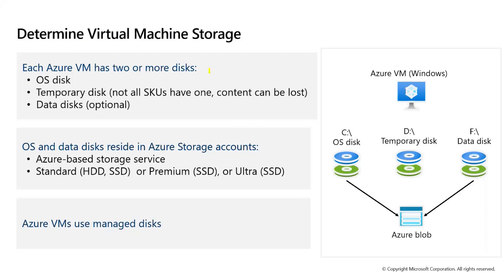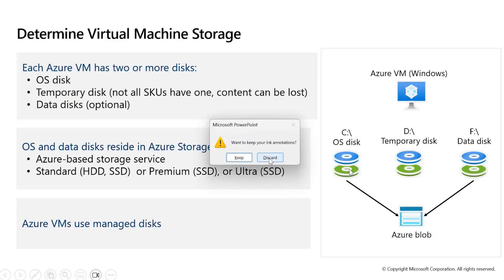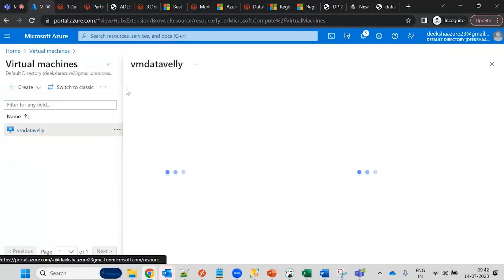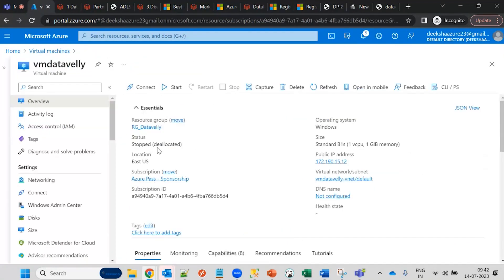Each virtual machine has two or more disks. The virtual disks are referred to as Azure Disk Storage, which are backed by Azure Blob storage. The first is the OS disk, where the operating system is installed. A question was raised earlier: if a virtual machine is in stop mode, does it still incur costs?